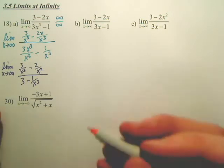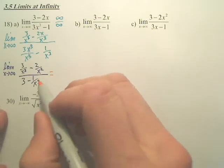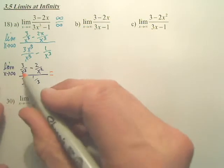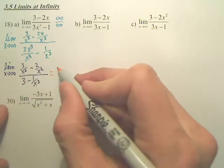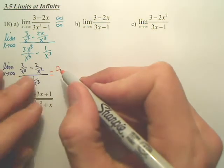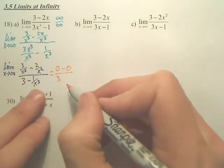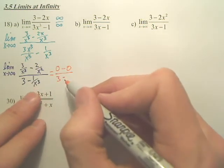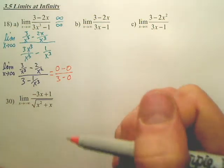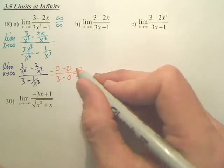If I plug in infinity now — when I plug the value in, I can drop the limit sign. 3 over infinity is 0. 2 over infinity squared is still 0. That's 3. And 1 over infinity cubed is 0. So the answer is 0 over 3, which is 0.